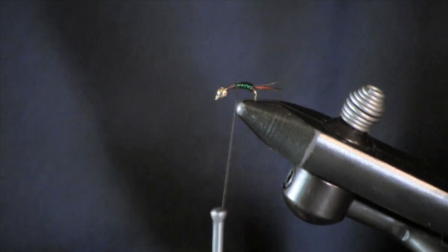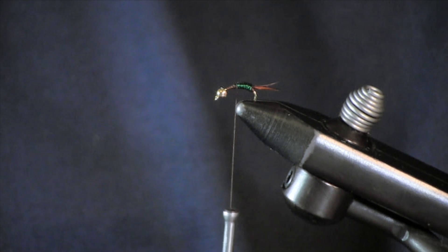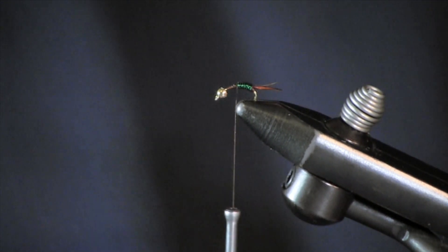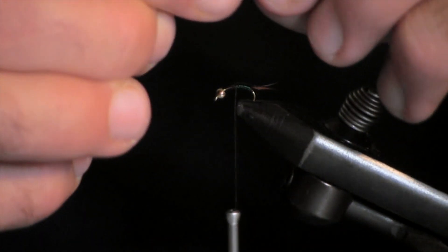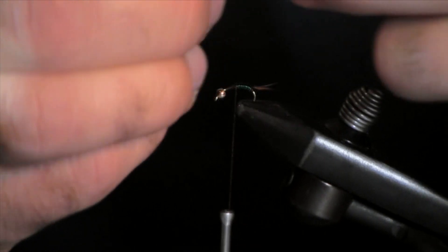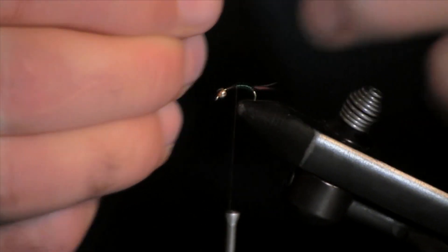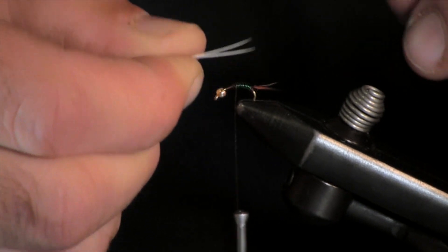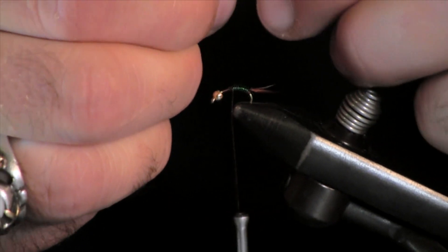Now the next step, we are going to put wings on this fly. Once again we are going to use the goose biots. This time we are going to use a white goose biot to make the wings. And you are going to line them up on the back. You want them to criss-cross a little bit like in an X pattern. We are going to just lay it down on top of the back.